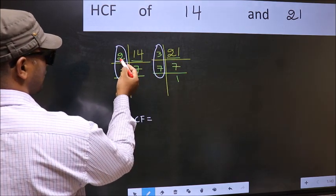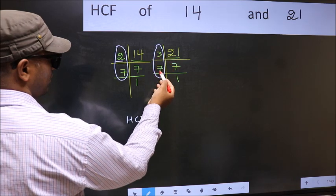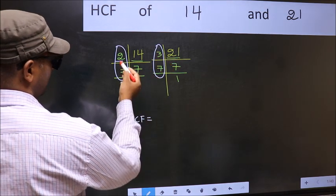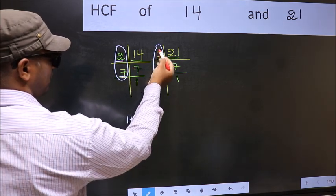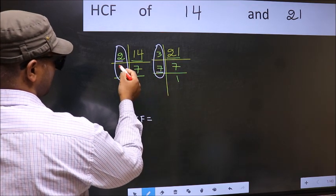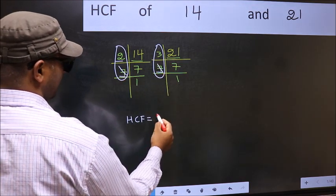Starting with the number 2. Do we have 2 here? No. Next number 7. Do we have 7 here? Yes. So cut 7 right here.